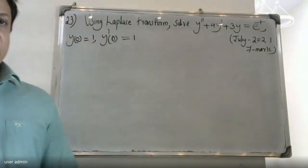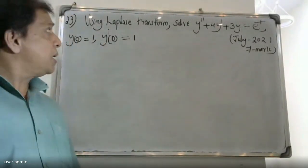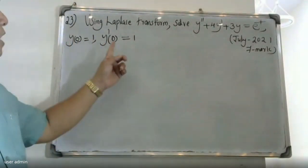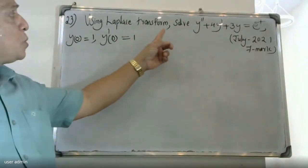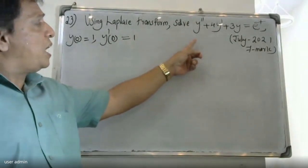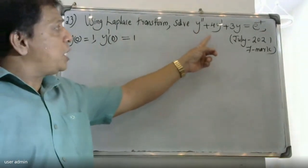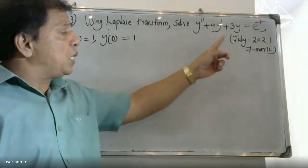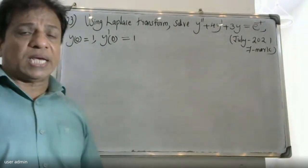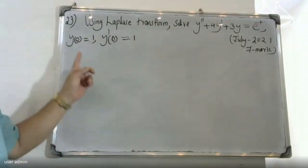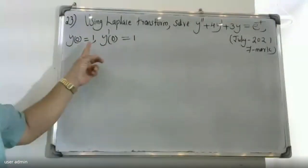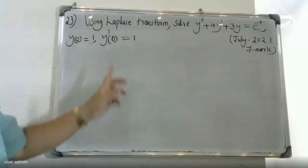Good morning, students. Today we solve an Adita University question using Laplace Transforms: solve y'' + 4y' + 3y = e^(-t), with initial conditions y(0) = 1 and y'(0) = 1.